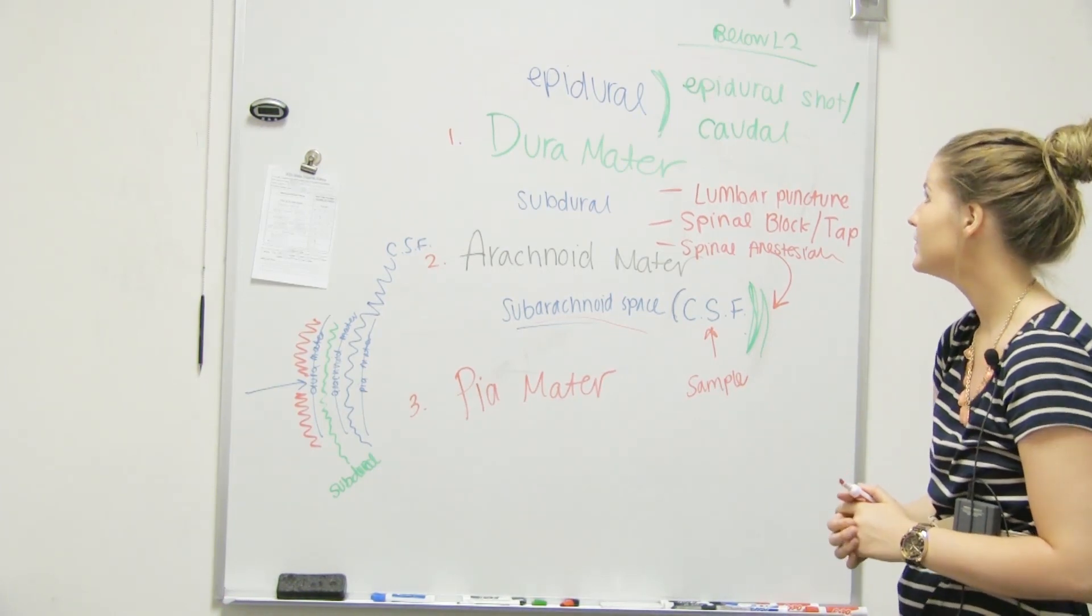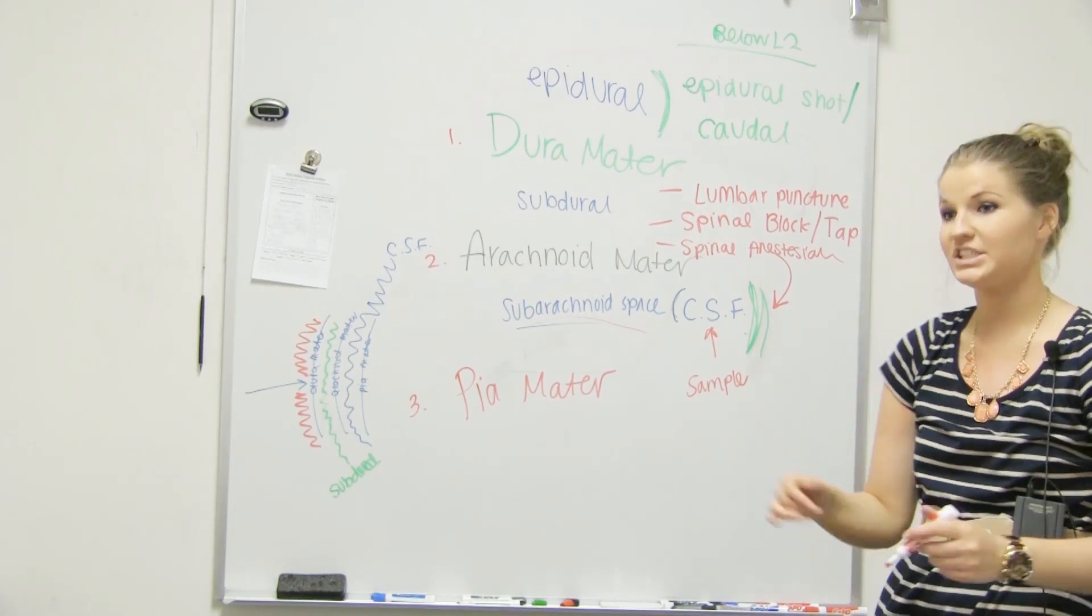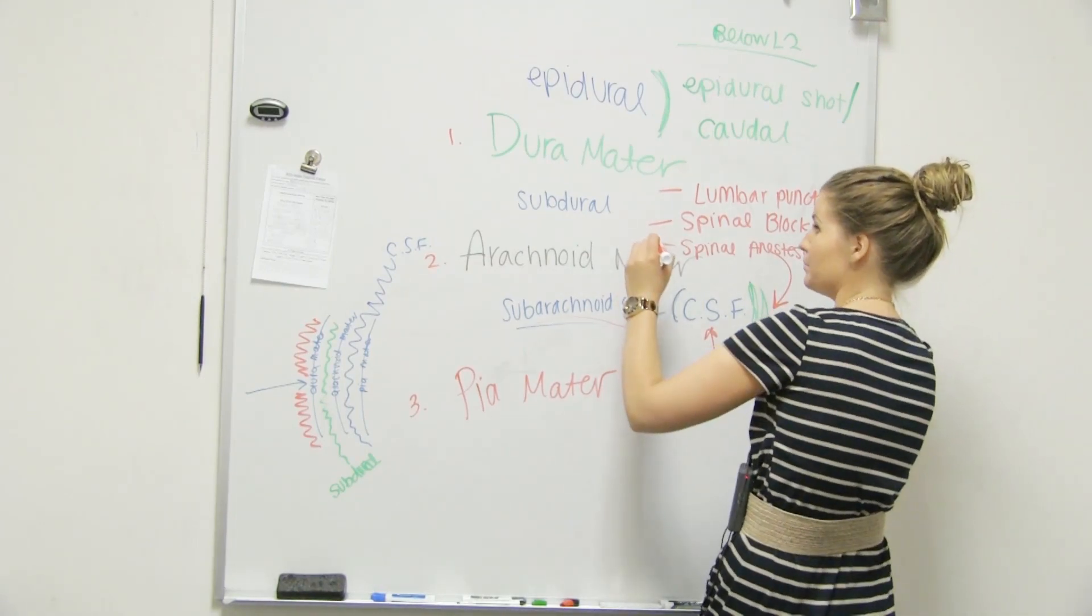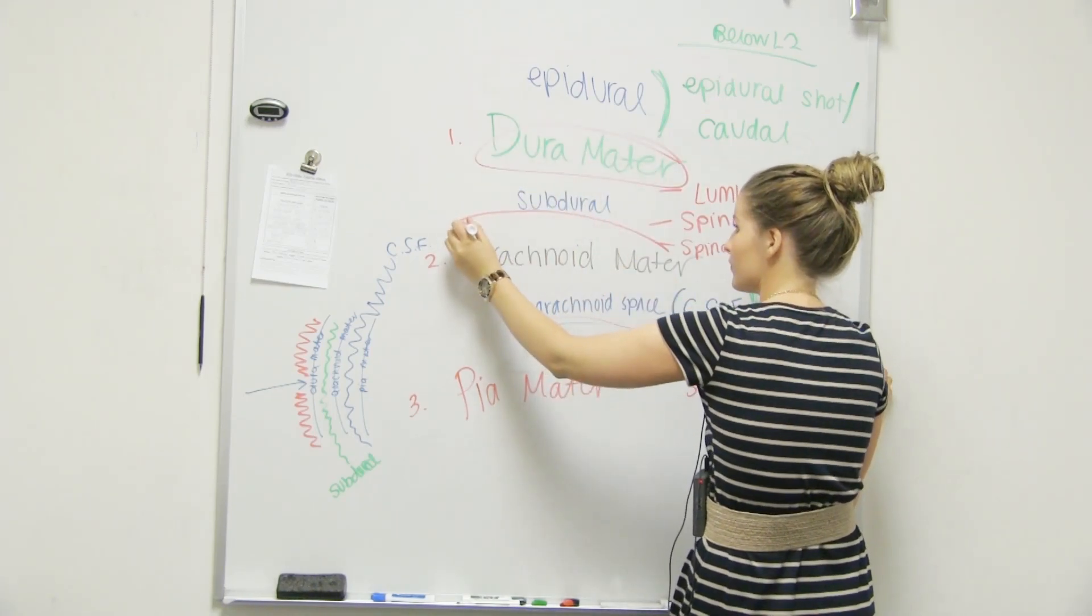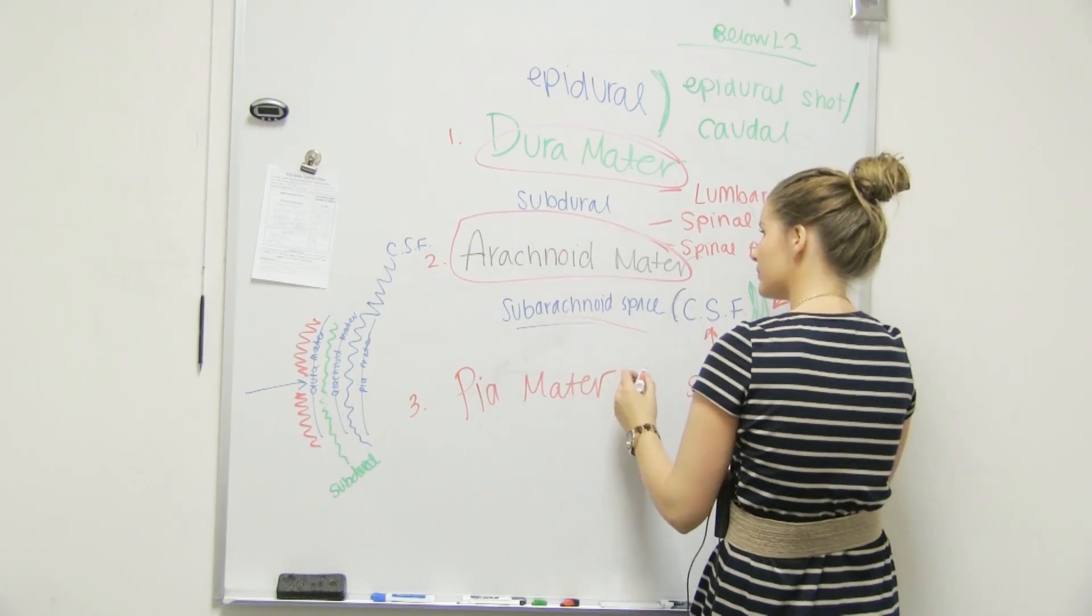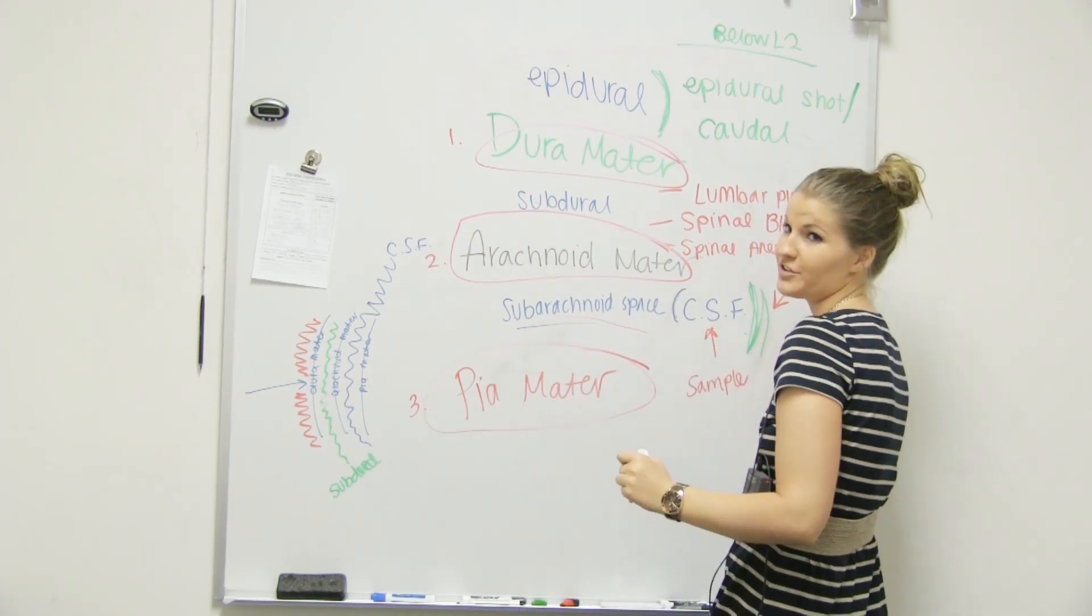And I think that's it. All your spaces. So what are your three meninges on this board? The dura mater, the arachnoid mater, and the pia mater. Awesome.